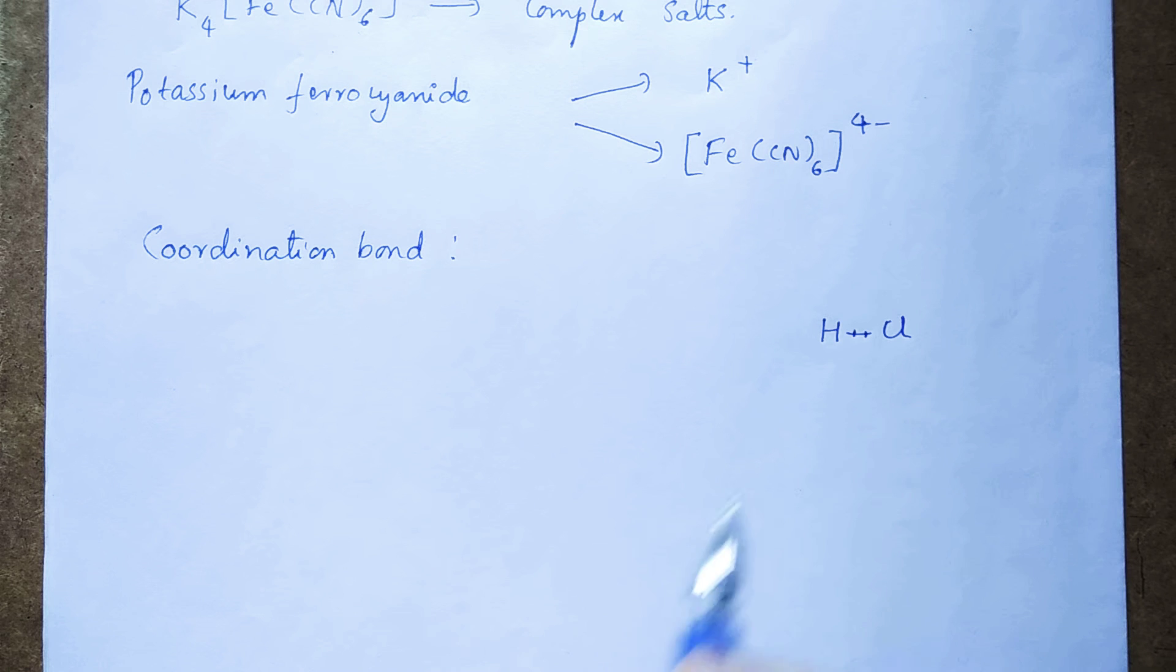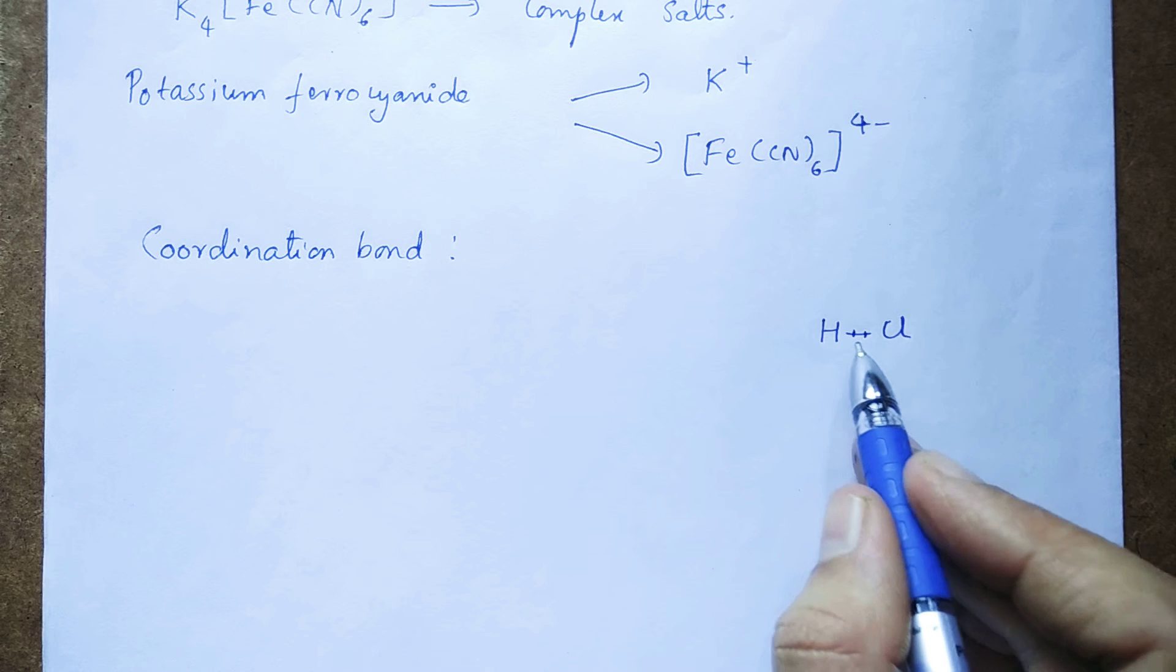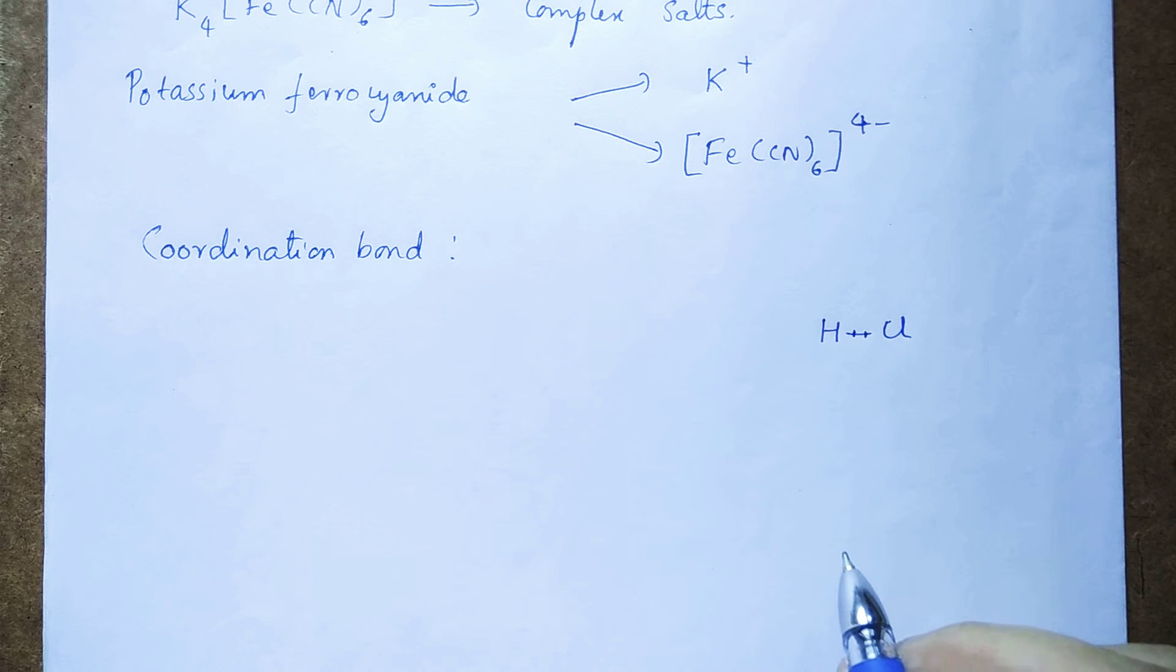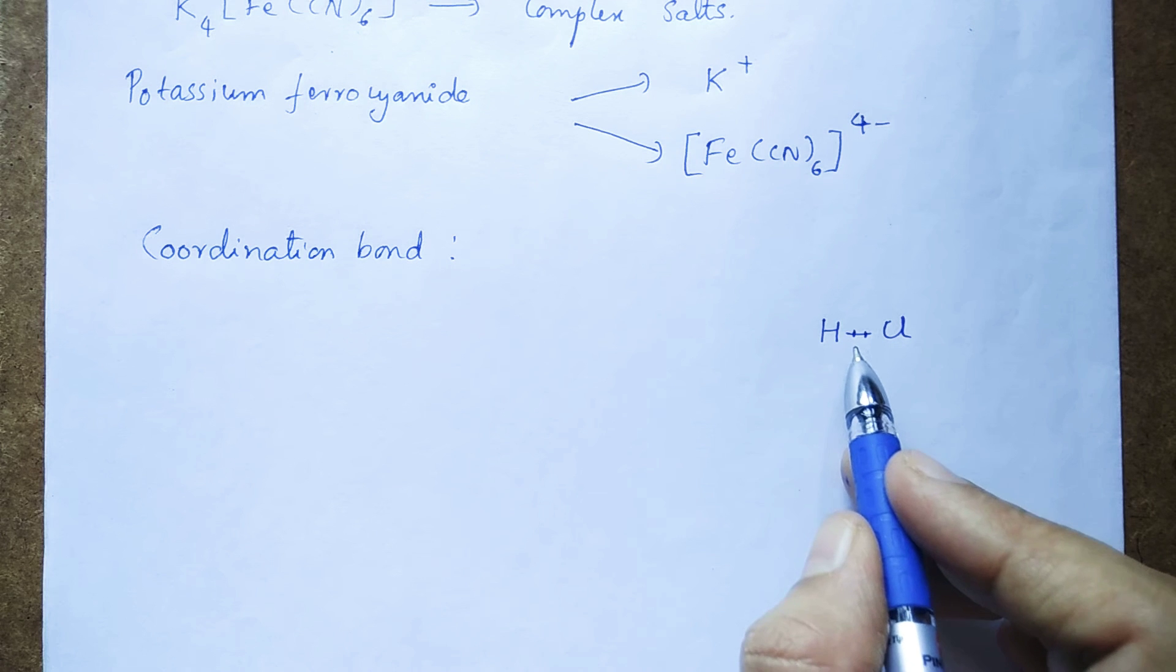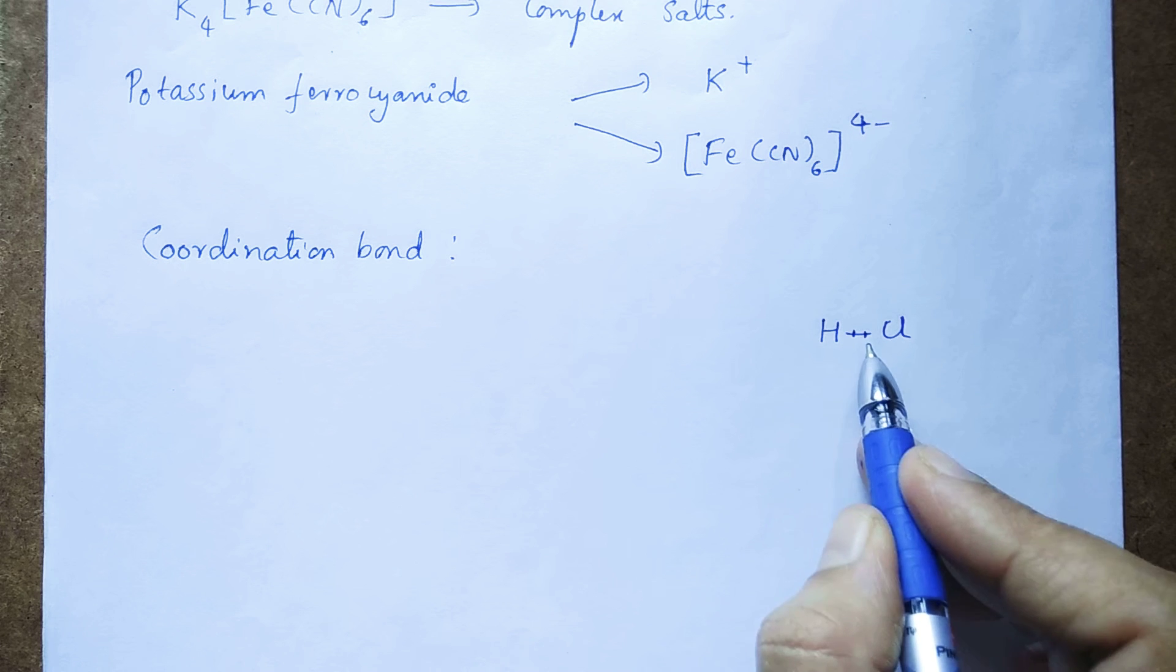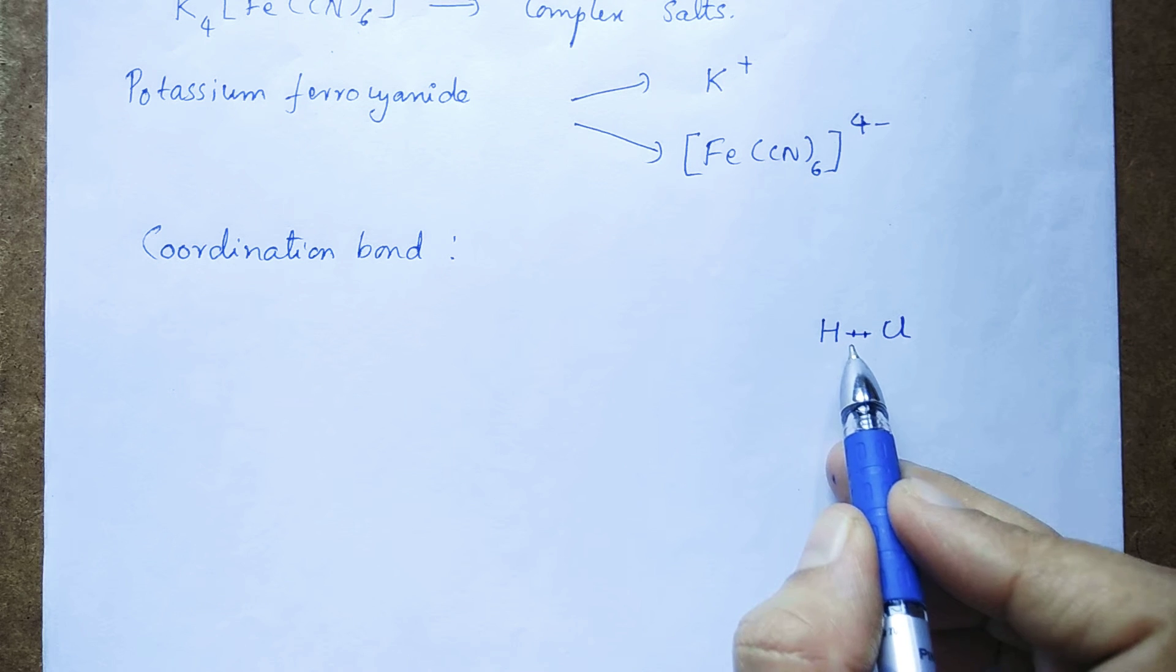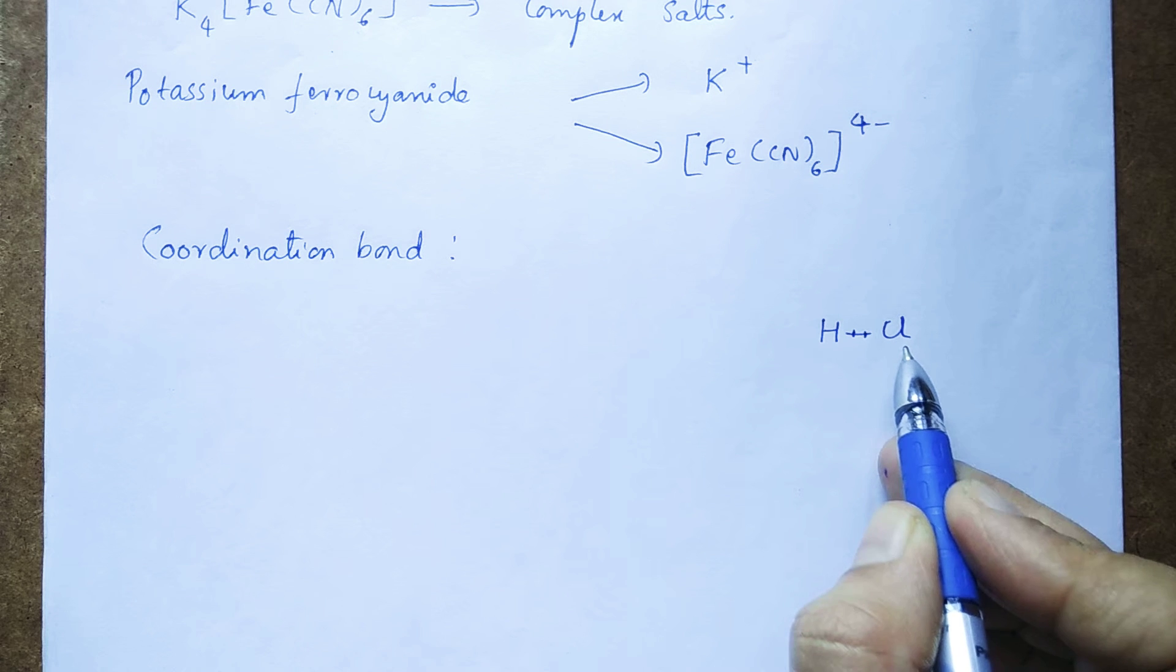In hydrochloric acid, we have a covalent bond between hydrogen and chlorine. As you know, in a single bond two electrons are present. What is the specialty about covalent bond here? The bond is formed by sharing of electrons. So in this bond we have two electrons. First electron is contributed by hydrogen, second electron is contributed by chlorine. After that both the electrons are shared equally between hydrogen and chlorine.